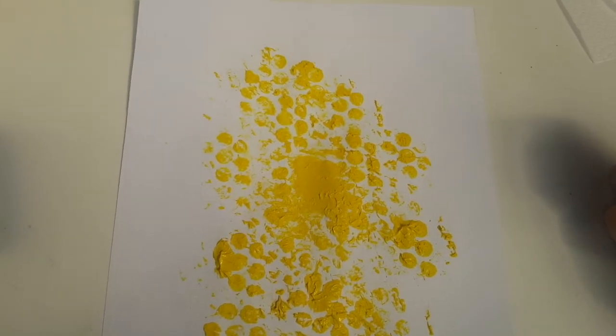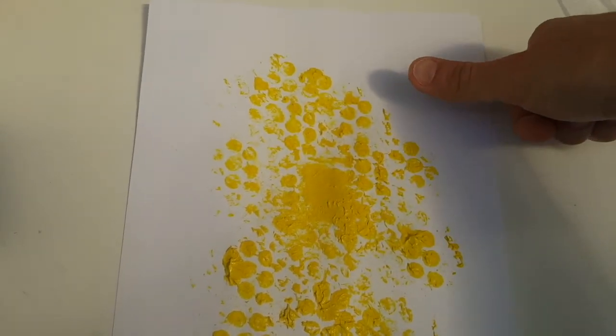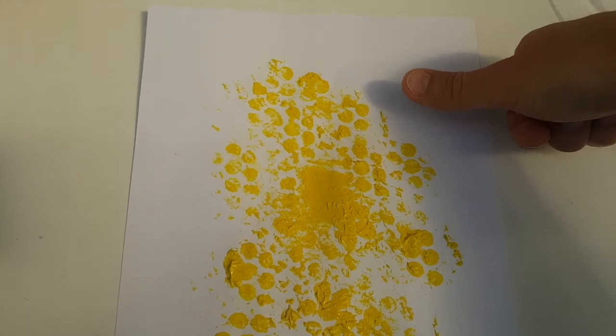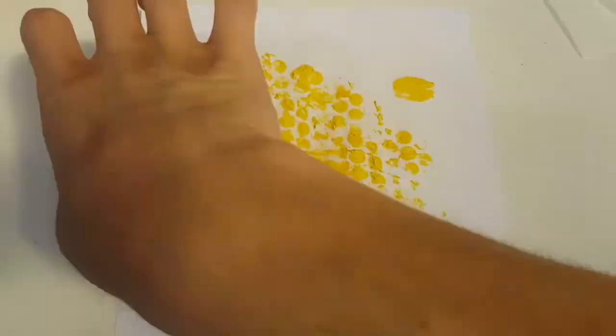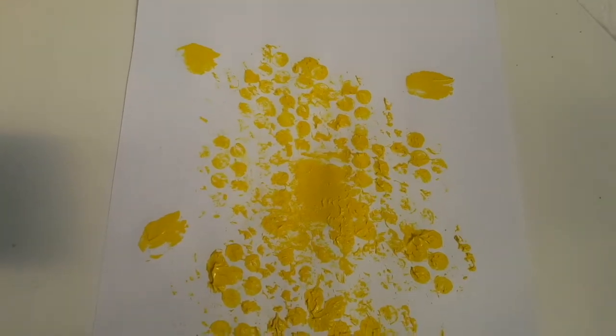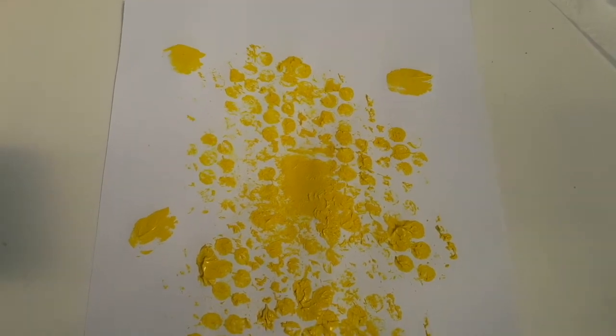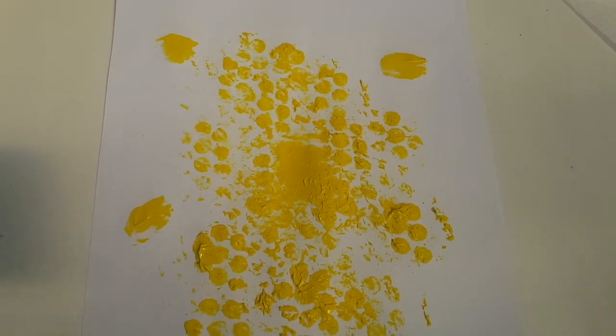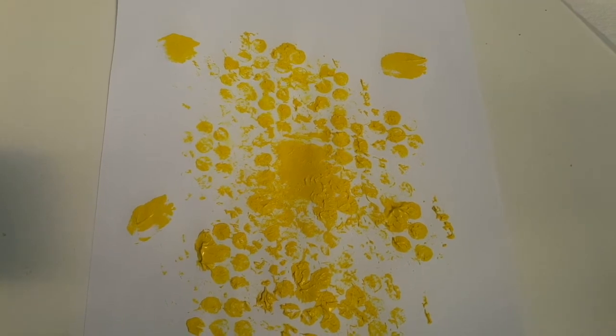And then you're just going to make three or four little thumb prints in the white space around what you've done already. Of course you can do more than that if you'd like. And now we need to let that paint dry, so you'll have to come back and finish this later.